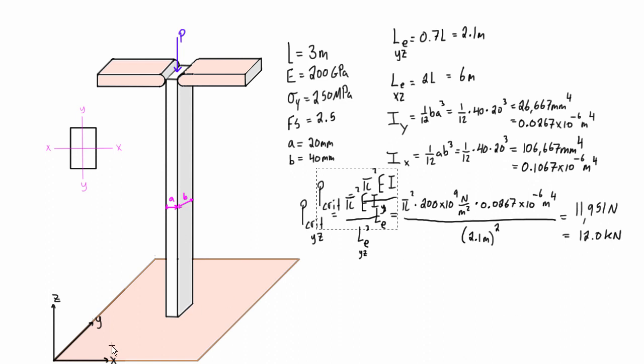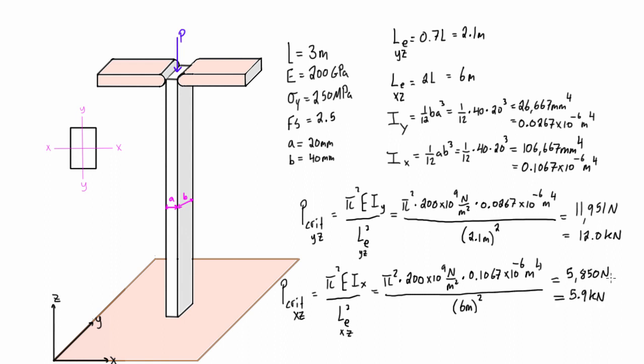Now let's check for buckling in the XZ plane. We're looking for P critical in the XZ plane, which means we're dealing with the moment of inertia about the X axis and the effective length for the XZ plane. When we plug in all the values, we find that to be 5.9 kN.